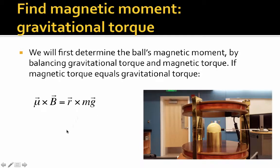The expression we're dealing with says that μ cross B, or the torque on the magnetic moment, is equal to r cross F, or r cross mg in this case.